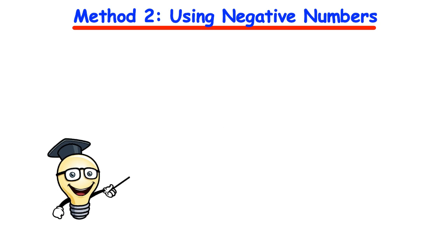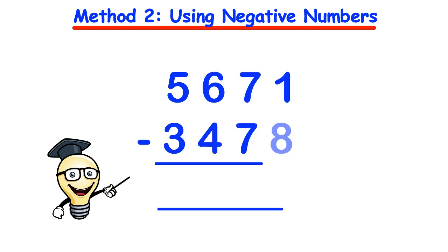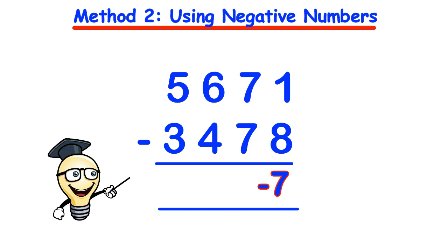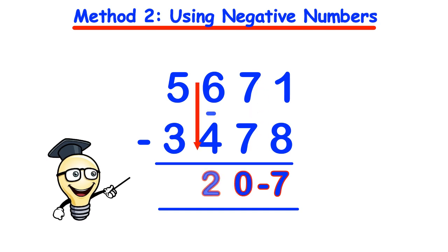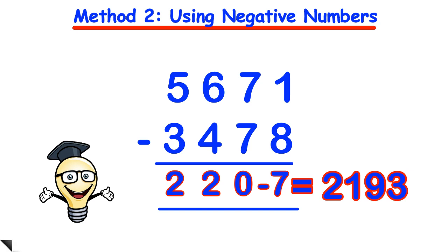Let's take a look at another example: 5,671 take away 3,478. Starting from the right hand side: 1 take away 8 equals minus 7, so we put that in the answer line. Then 7 take away 7 is 0. 6 take away 4 is 2. And 5 take away 3 is 2. So the answer reads 2,200, and then we subtract 7 from 2,200: 2,200 minus 7 is 2,193.